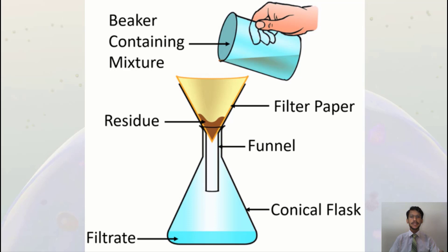As you can see in this diagram, there is a beaker with some liquid that is poured on the surface of the filter paper. When the liquid passes through, it moves into the conical flask and the remaining solid particles stay on the filter paper in the form of residue. In this liquid, the residue is separated out through the process of filtration.